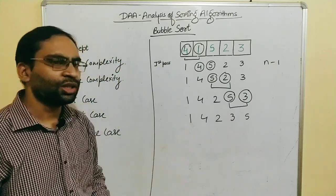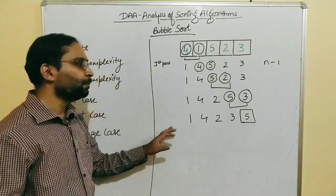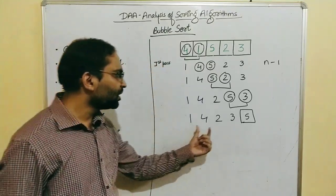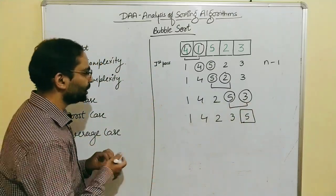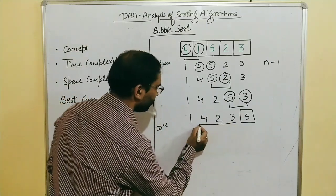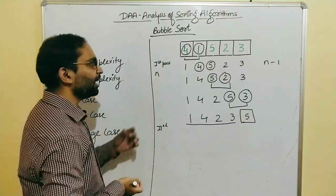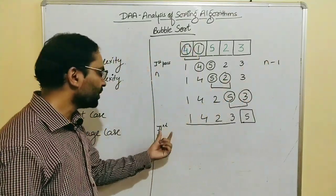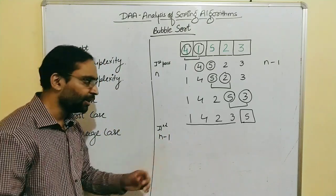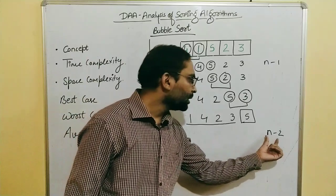After the first pass, the largest element — 5 — is placed correctly at the rightmost position. For the second pass, we take only n minus 1 elements. In the first pass we performed n minus 1 comparisons over n elements. In the second pass, we take n minus 1 elements and perform n minus 2 comparisons.